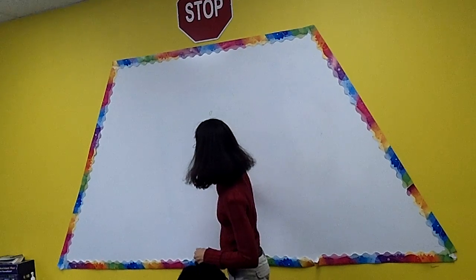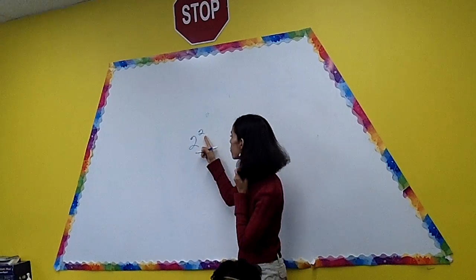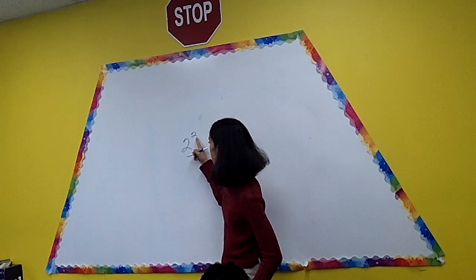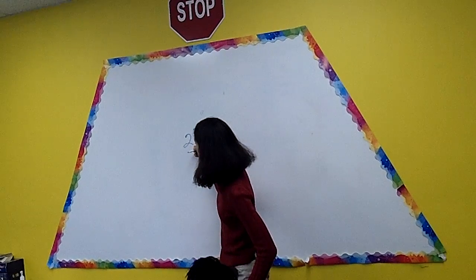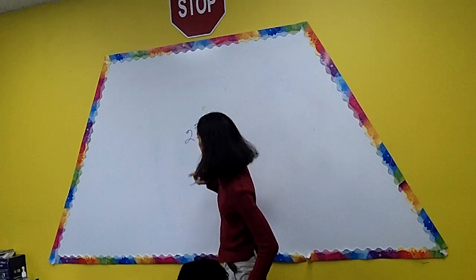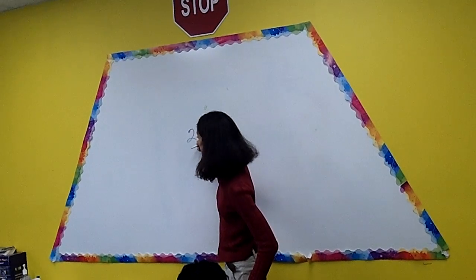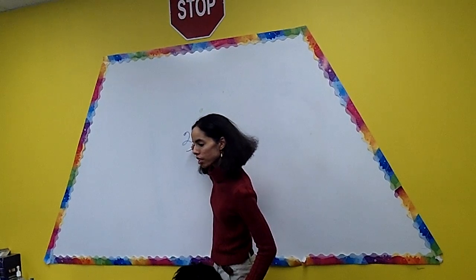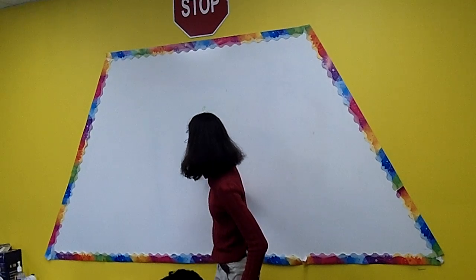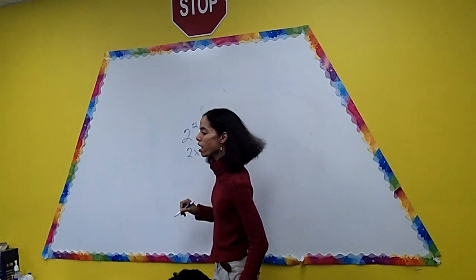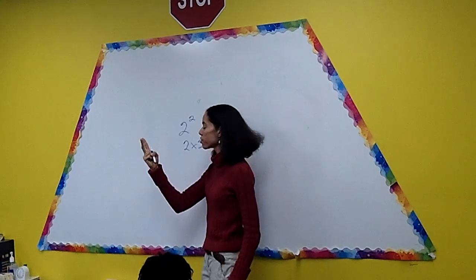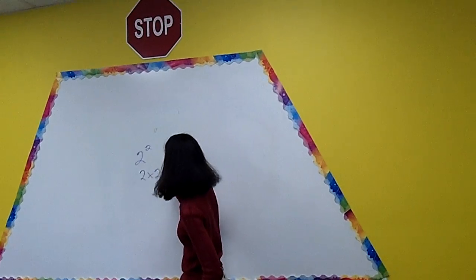So if I have two, we call this the second power or when the little two is up here, that's called our exponent. And this big number is called our base. So this is going to tell us how many times to multiply the number two. So how many times will I multiply the number two leaders? Two. Two. So that's two times two. Class, what's two times two? Four. Two times two is four. Very good. So two squared is four.